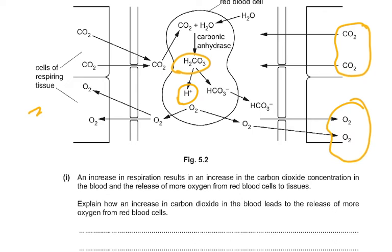Carbon dioxide also binds to the amino terminal of the globin alpha and beta chains, forming carbaminohemoglobin - please do not say carboxyhemoglobin, as that involves carbon monoxide. The allosteric effect changes the tertiary structure of oxyhemoglobin, causing the release of more oxygen.